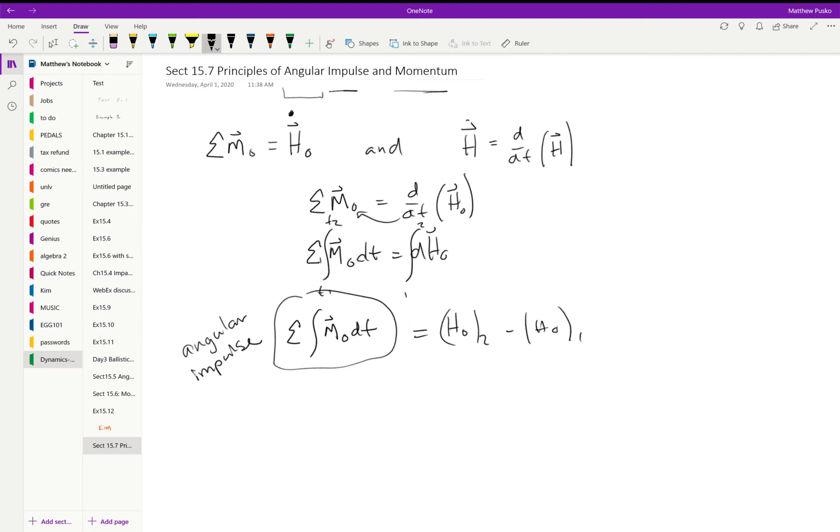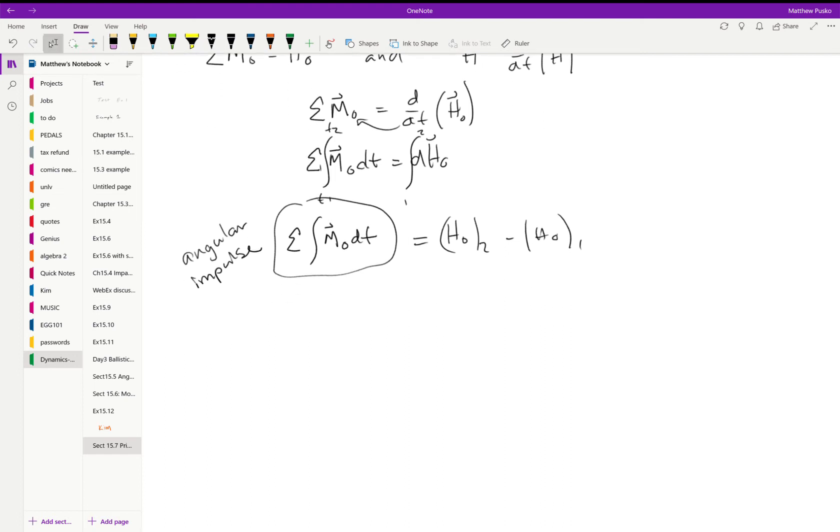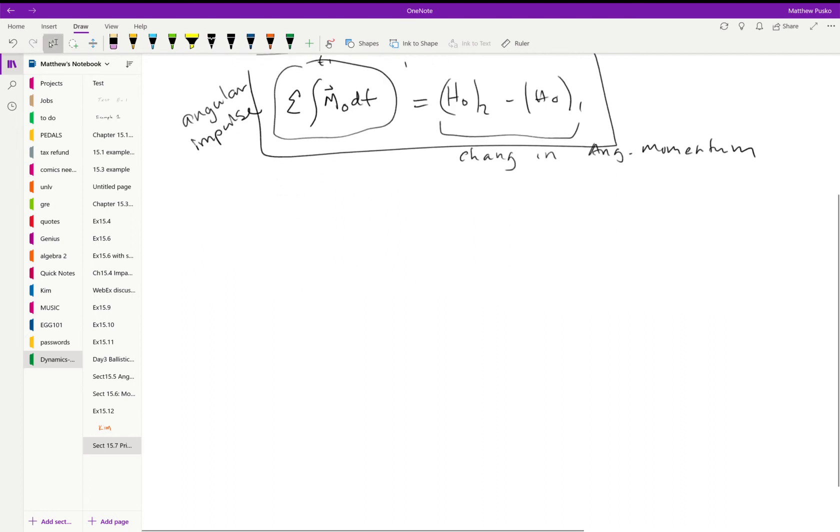And I'm going to go ahead and integrate the other side, and that would give me after evaluating H naught at two minus H naught at one. Okay, so there's a law for you: our angular impulse is equal to the change in angular momentum.